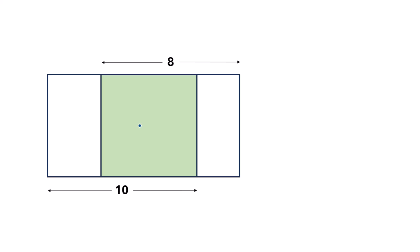Hello everyone. In this video I am going to solve an interesting geometric problem. We have a large rectangle and there is a square inside it — the green shaded square. We are given that the length from this point to this point is 8 units, and the length from this point to this point is 10 units. Our task is to find the perimeter of this large rectangle.